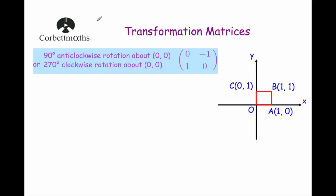Hi, welcome to this Corporal Maths video on transformation matrices. In this video we're going to focus on the transformation matrix which is a 90 degrees anti-clockwise rotation about the origin, or a 270 degrees clockwise rotation about the origin, and that's the matrix 0, minus 1, 1, 0.